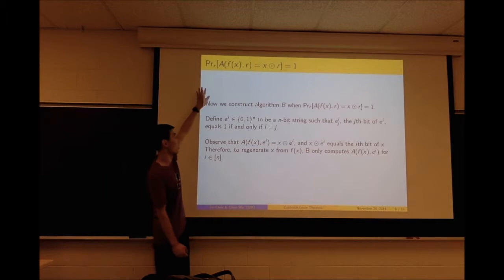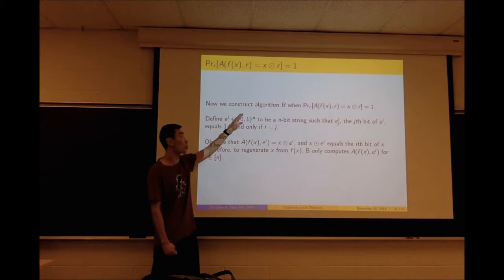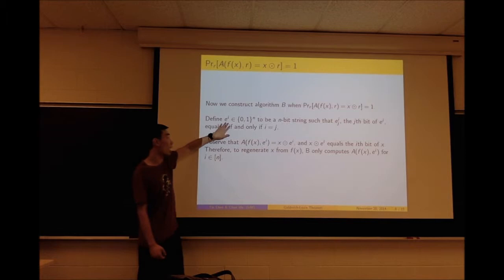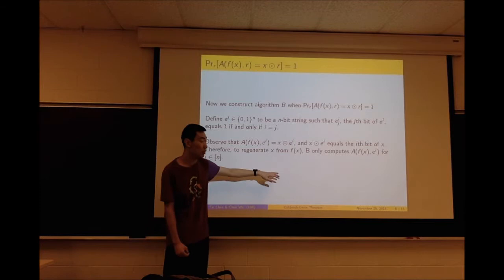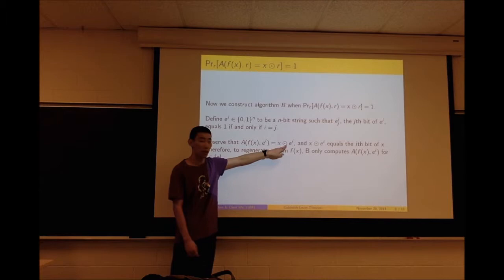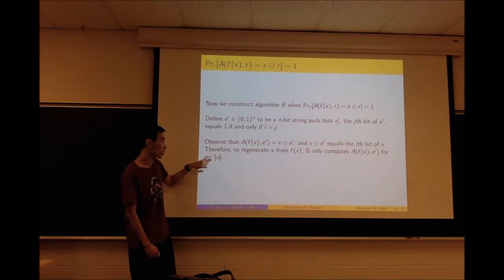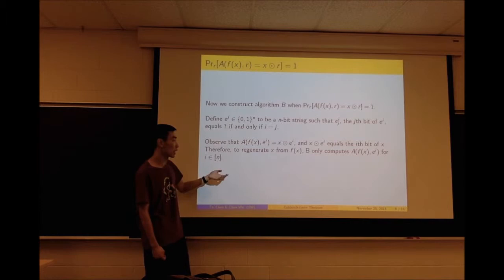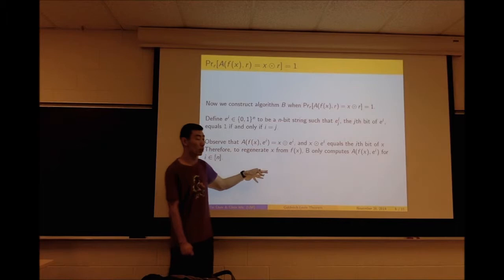Now we start with the stronger assumption that the probability over all r that A(f(x), r) equals x dot r equals 1. We define e_i to be the n-bit string whose i-th bit is 1 and all other bits are 0. Note that A(f(x), e_i) equals x dot e_i, which gives the i-th bit of x. So algorithm B computes A(f(x), e_i) for all i from 1 to n, recovering all bits of x from f(x) with probability 1.